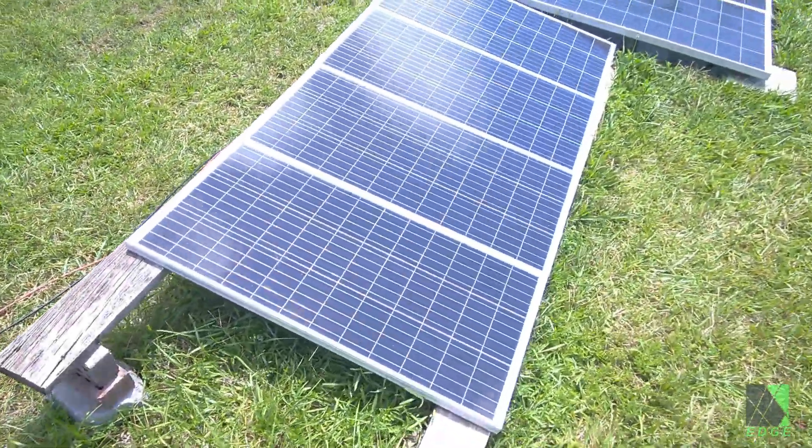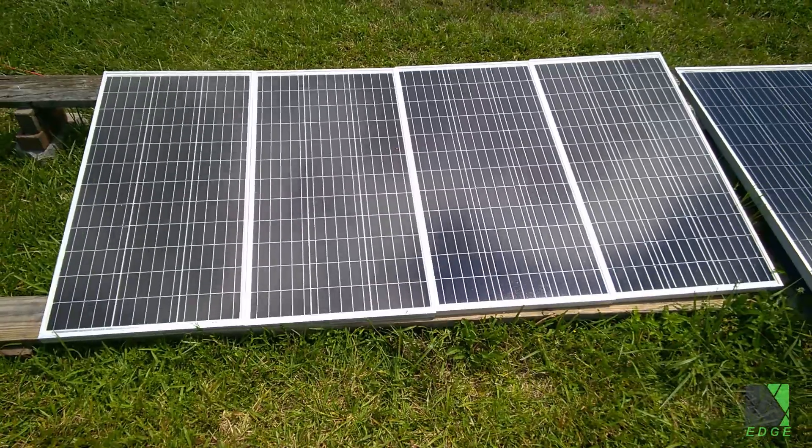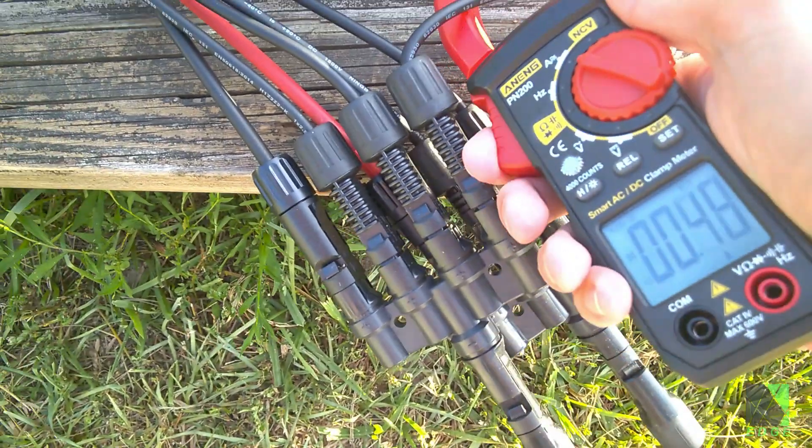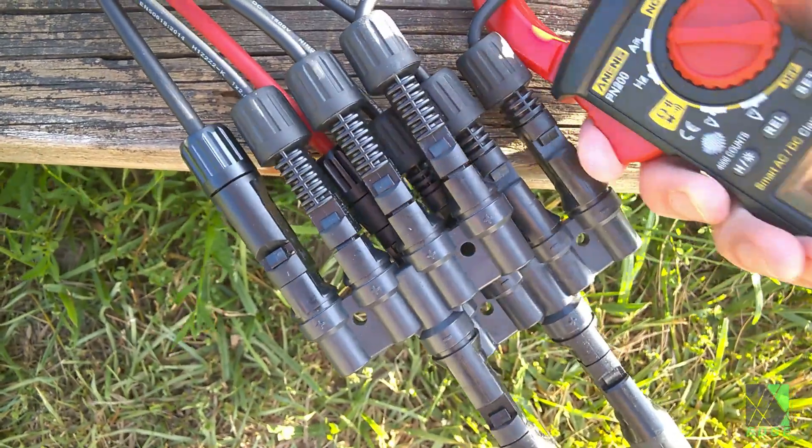You cannot tell by looking at a string of solar panels how much current each panel is producing, but the knowledge is quickly gained by simply clamping each wire from each solar panel individually and notating how much current is flowing through.